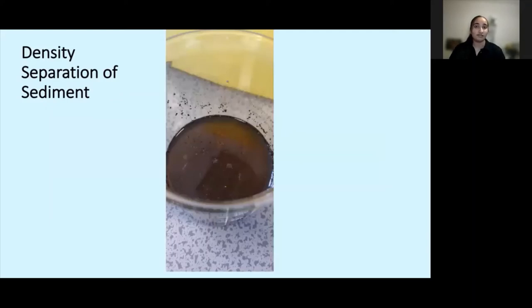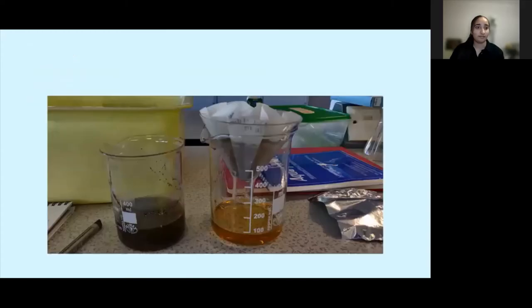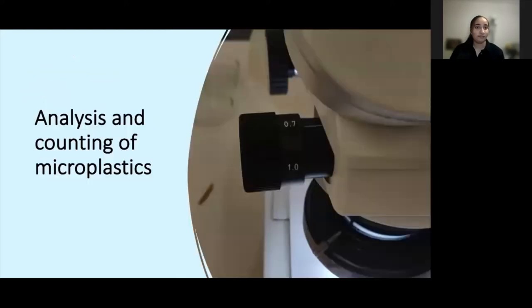However, this method took some time to become accustomed to and wasn't the best in being confident that suspected synthetic fibers were indeed plastic. To improve confidence that the plastics we found were indeed plastic, we also used the FTIR machine. This machine allowed us to not only identify if any fibers or fragments were synthetic, but also helped us to identify the exact polymer type present.